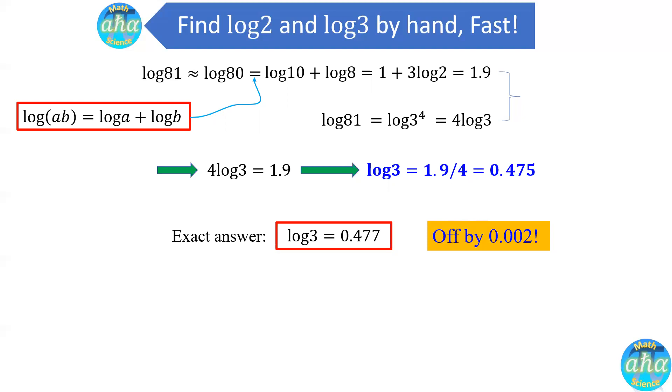And in fact, this method can be used to evaluate the log of any numbers. And the answer is actually very accurate. And the difference usually is about like 1% or sometimes less than that, as you can see from these two examples. And the trick is to find a value A so that the log of A can be easily evaluated. And the A is basically some power of the number you want to evaluate.